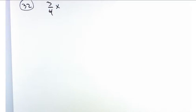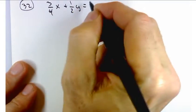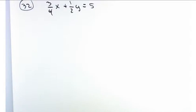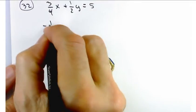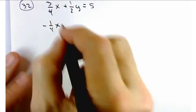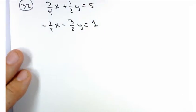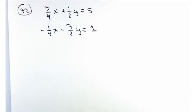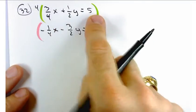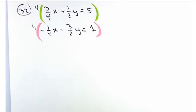3 quarters x plus 1 half y equals 5. And minus 1 quarter x minus 3 halves y equals 1. Now, working with this system of equations as is would be kind of a pain because of the fractions. So, the first thing that I would suggest we do is we get rid of the fractions. How can we get rid of the fractions in problem number 32? Multiply the top equation by 4 and the bottom equation by 4, right? Multiply the top equation by 4 in both cases is really multiplying by the LCD.